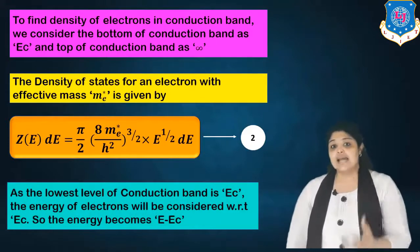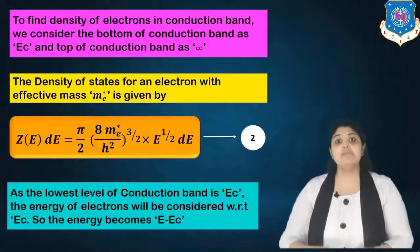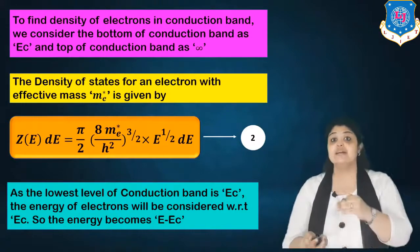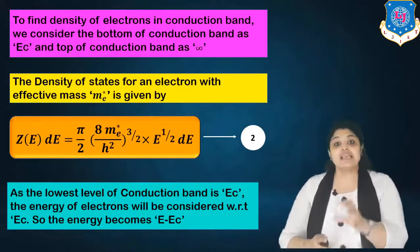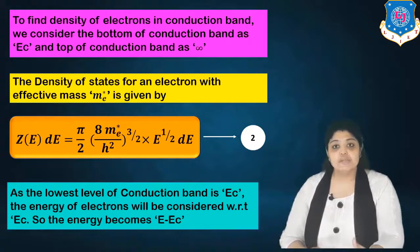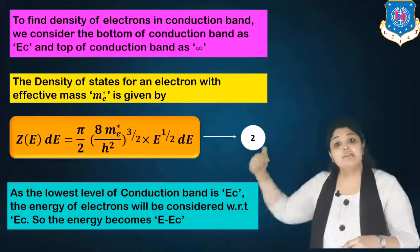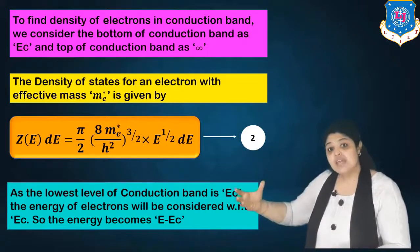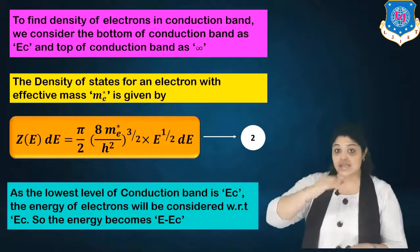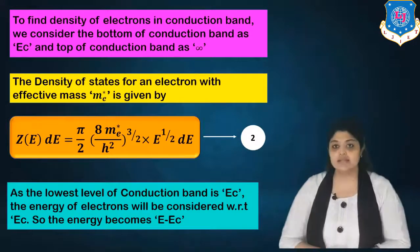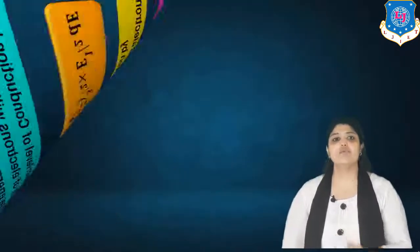At the lowest level of the conduction band, the minimum energy of electrons is EC, not zero. If an electron is present in the conduction band, its energy would be at least EC or more, since the conduction band starts from EC. Therefore, in the density of states equation, instead of E, we substitute (E − EC), giving the modified DOS expression for the conduction band.